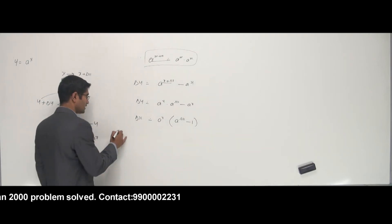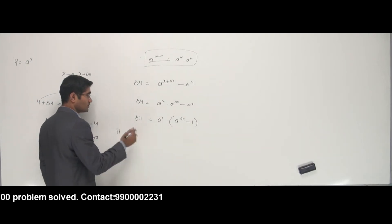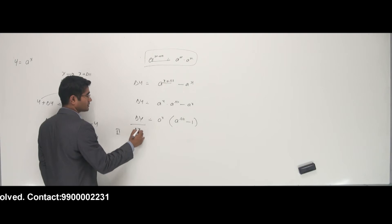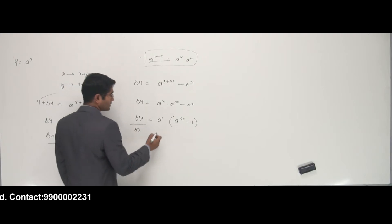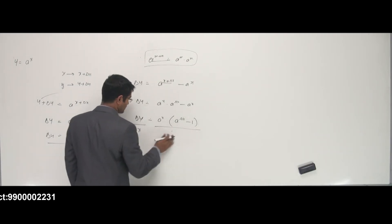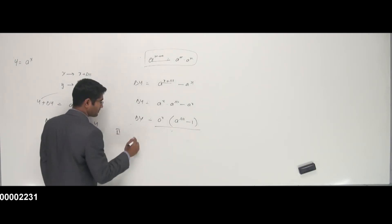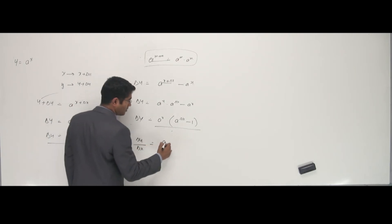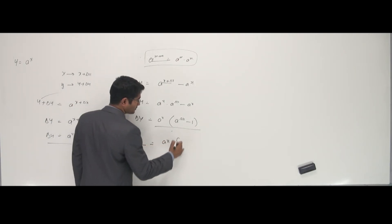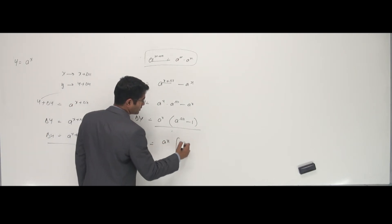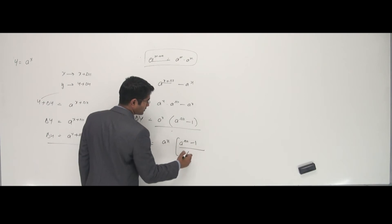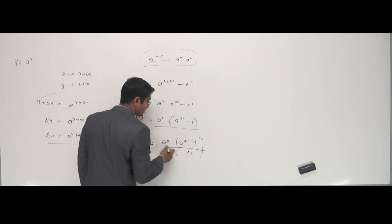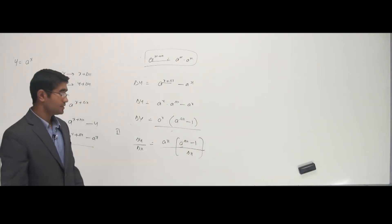Now the second stage is divide both sides by delta x. So delta y by delta x goes like a to the power x, multiplied by (a to the power delta x minus 1) by delta x. I am dividing both sides by delta x.